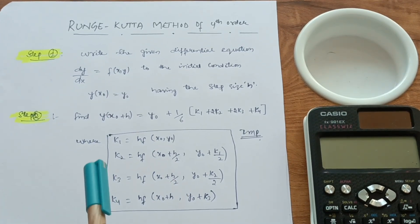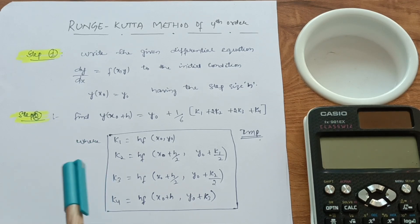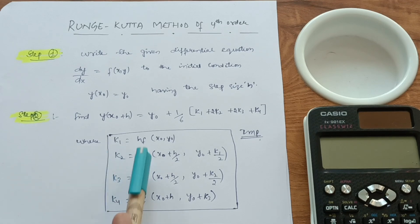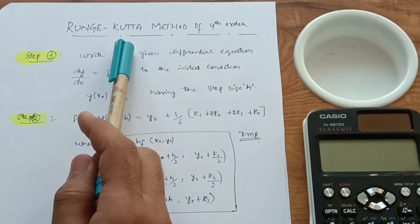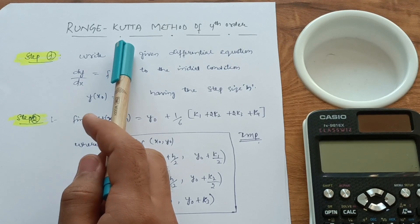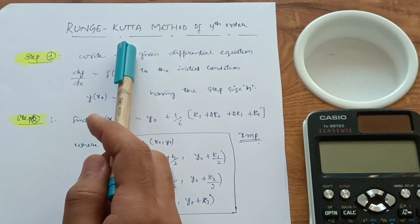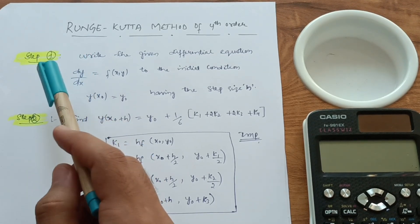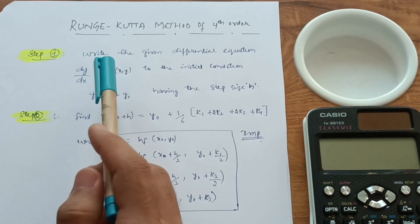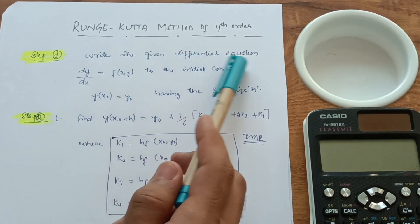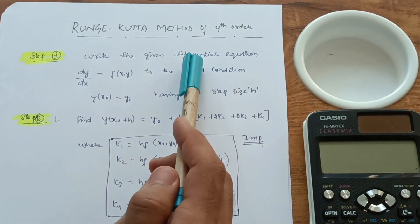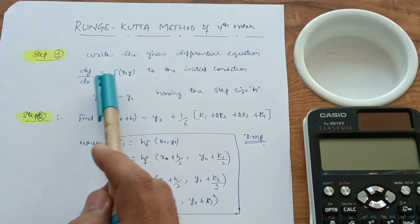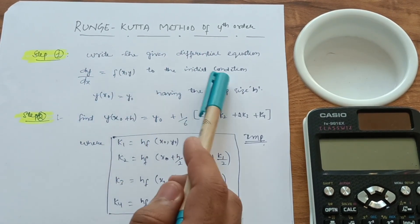I have taken one example which we will solve later. First, let me cover some particular formulas which you have to memorize in this concept. This is the general method for problem solving — it gives perfect answers, unlike Euler's and modified Euler's method which don't give perfect answers. This method gives the correct answers. Step one: write the given differential equation. There will be a differential equation with boundary conditions in the question.